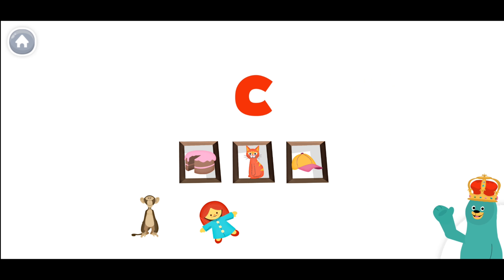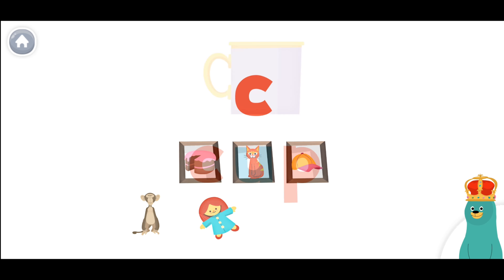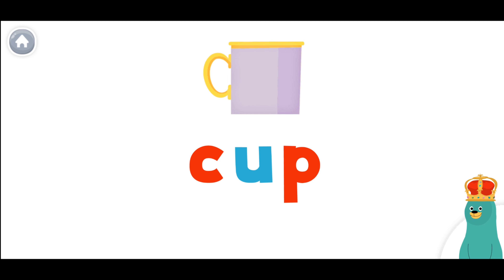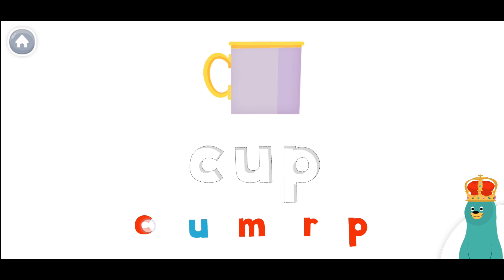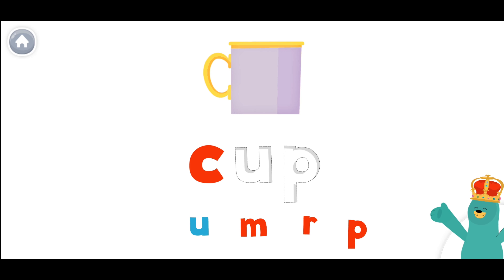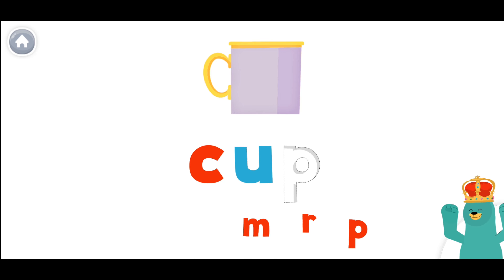You dragged the things that start with the kk sound. This is the word cup. Cup is spelled C-U-P. Drag the letters to spell the word cup. C-U-P.